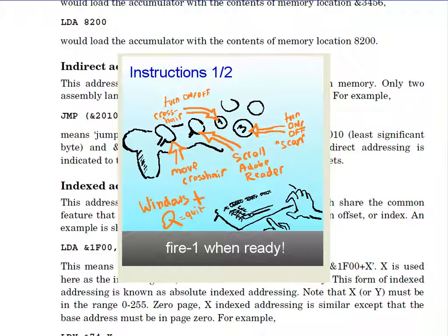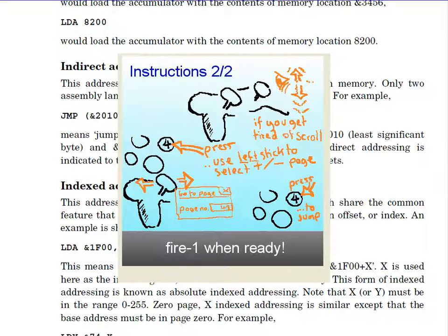Starting the program—nice easy instructions, page one of two. On the left hand side you move the crosshair, on the right-hand side you scroll the page. You can use Windows+Q to quit. There's a crosshair button and a scan button (button 3) that turn on and off.